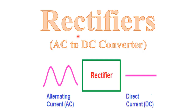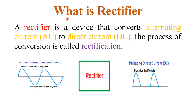Hello friends, welcome to Quick Learn tutorial series. In this video I will explain you about rectifiers, the AC to DC converters. Rectifier is an electrical device that converts alternating current to direct current, or it is an AC to DC converter, and the process of conversion is called rectification.